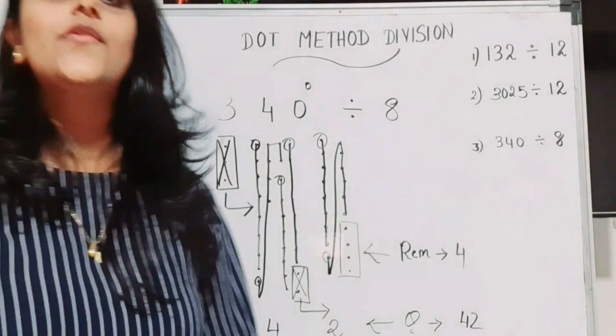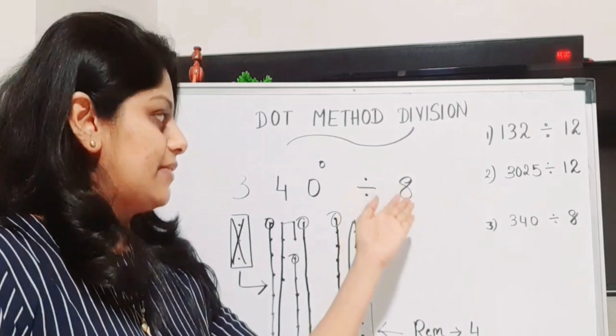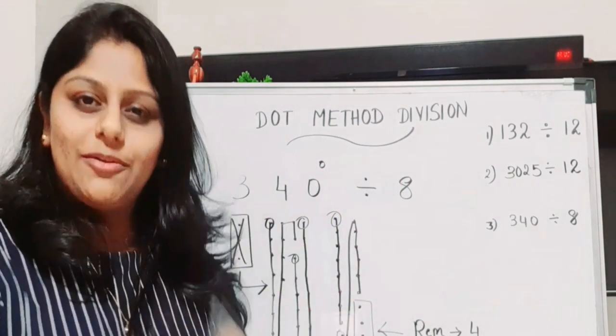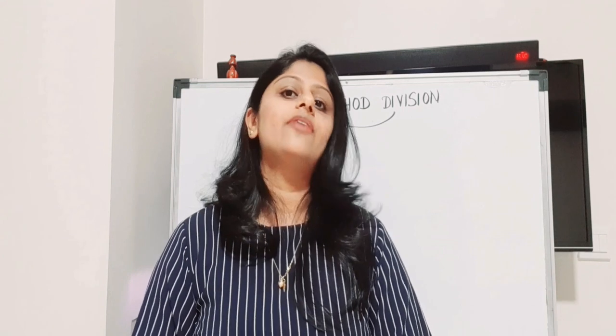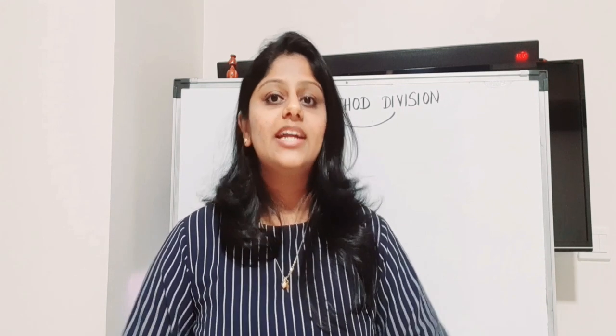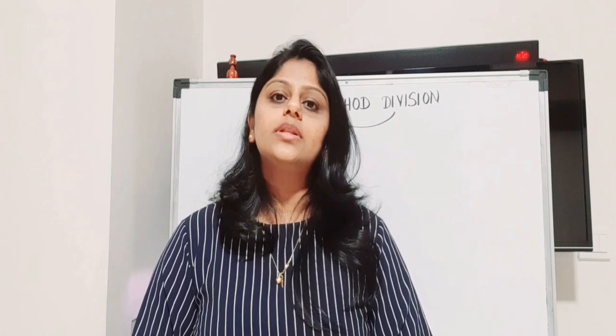The remainder is 4. Whenever you cannot divide with the given number, move the dots forward — each dot represents 10 when moved to the next column. We have now covered all three types using the dot method: direct division, division with remainder involving a zero column, and division where the leading digits are not divisible. Until next time, bye from Reena!